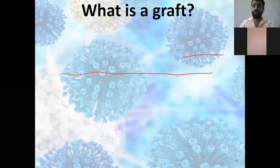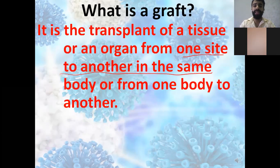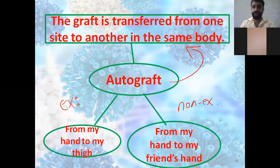You also have to know what a graft is. A graft is a transplant — a tissue or an organ transferred from one site to another in the same body, or from one body to another. This is called grafting, and it is of four types.